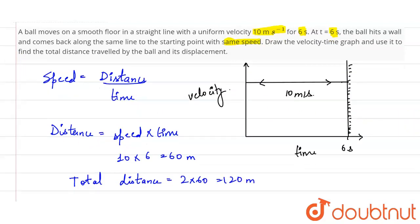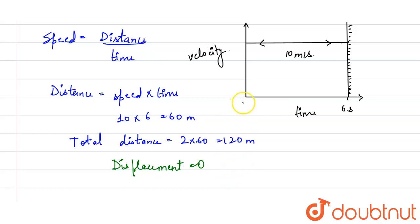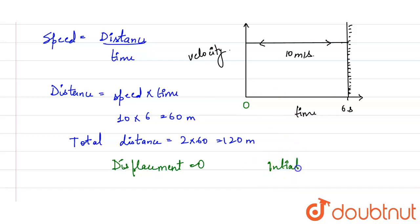Our displacement is going to be zero. Why zero? Because the initial and final positions are the same. Displacement is the change of position — the ball starts here and comes back to the same point after hitting the wall. Since the initial position equals the final position, there is no displacement.